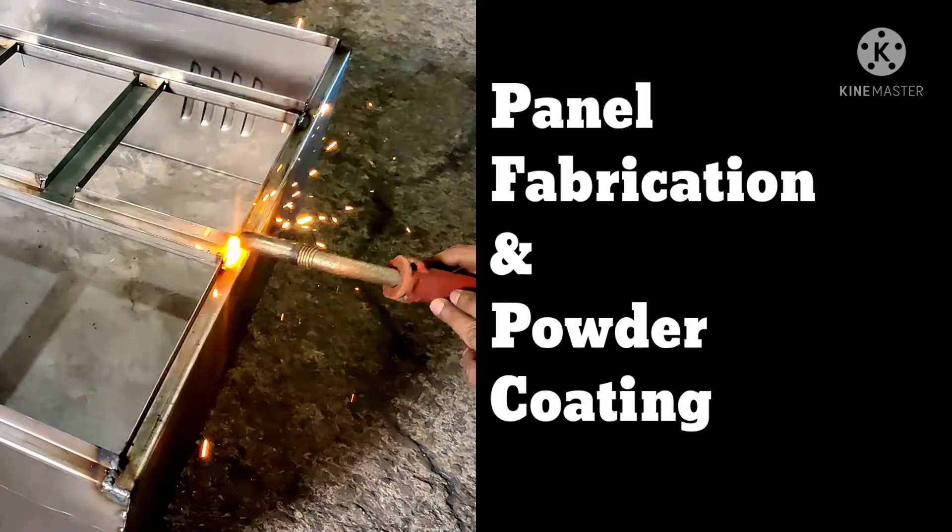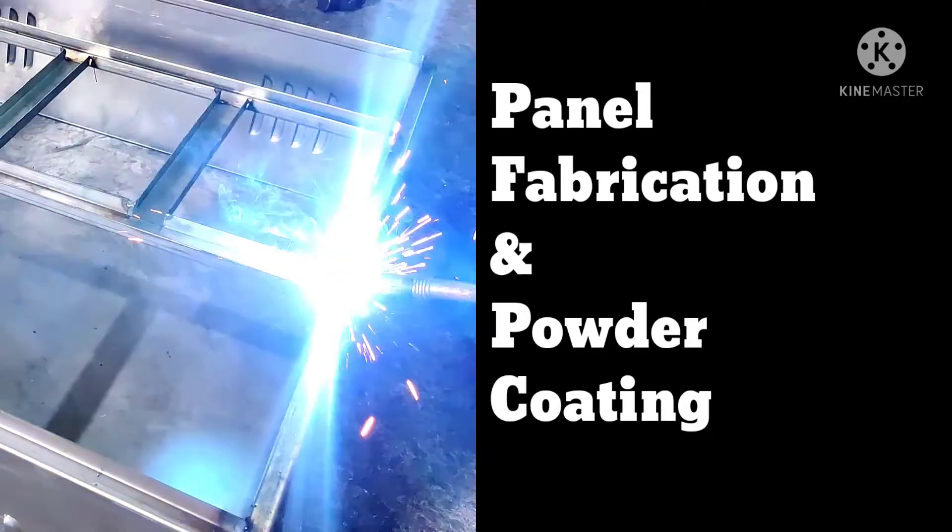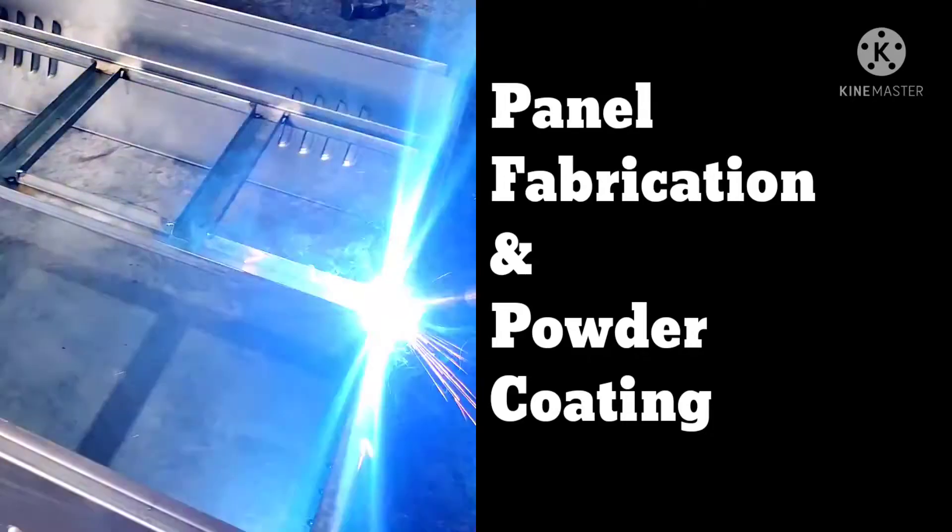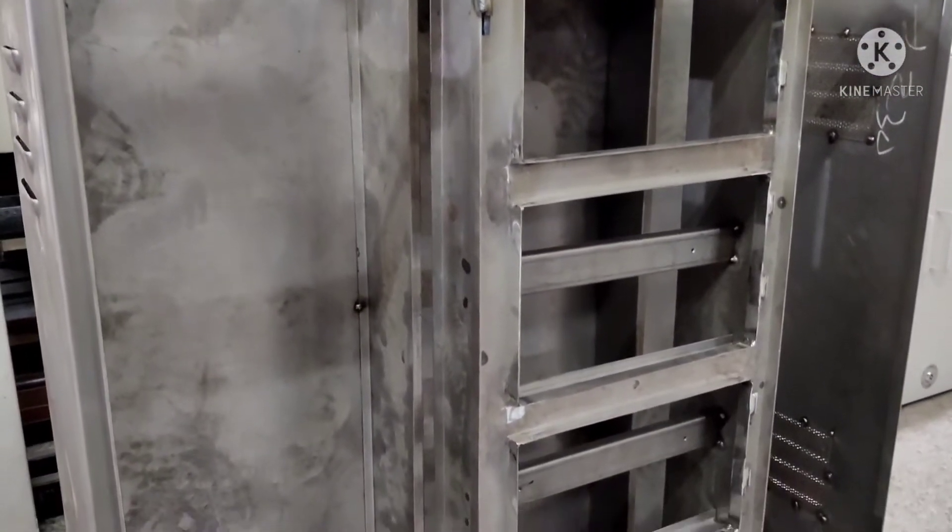Once GA is approved by design engineer and customer, the next procedure is panel fabrication and powder coating. This is how the panel looks in our fabrication unit.